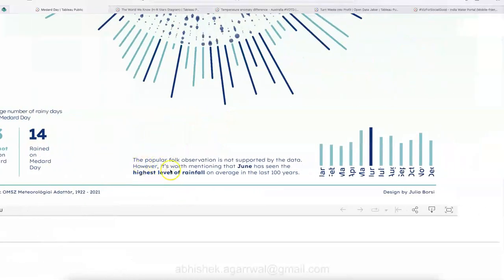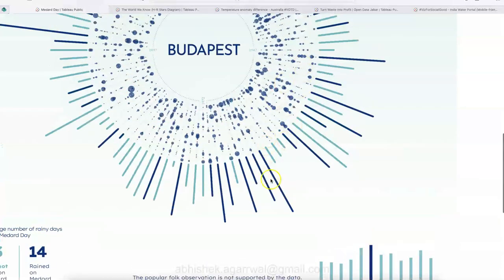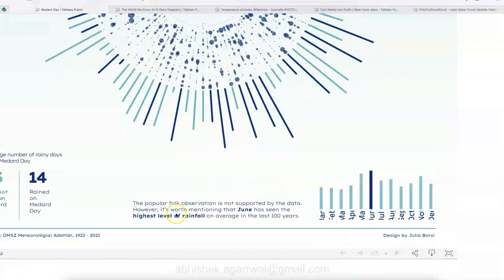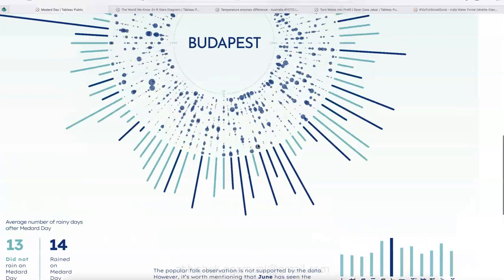Then, this is a conclusion. The popular folk observation is not supported by the data. However, it's worth mentioning that June was seen the highest level of rainfall based on this chart.